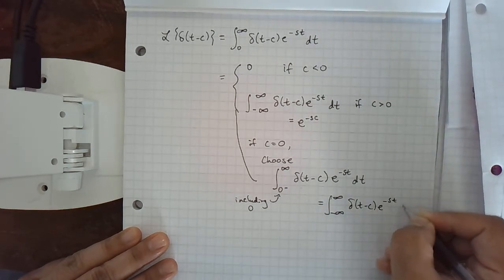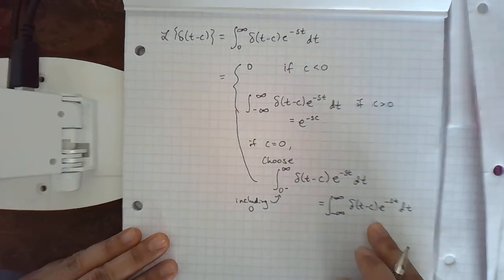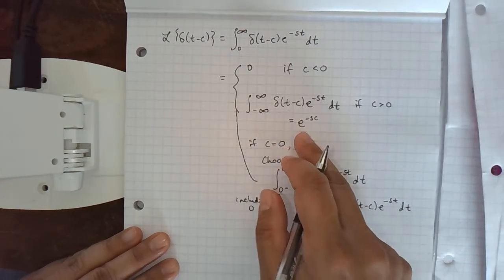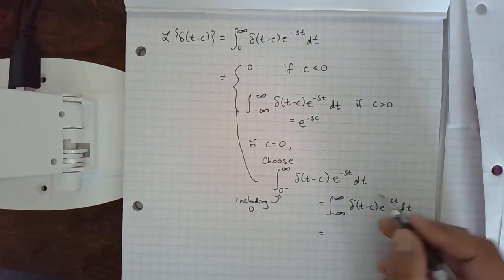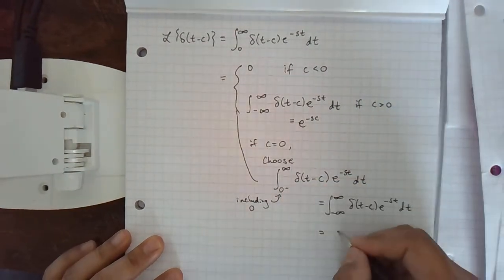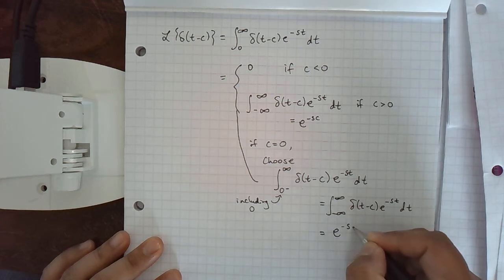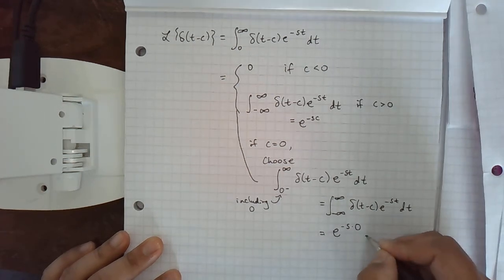Same as before, we're picking out the value of this other function at c; in this case c equals zero. So it's e to the negative s times zero, which is e to the zero, which is one.